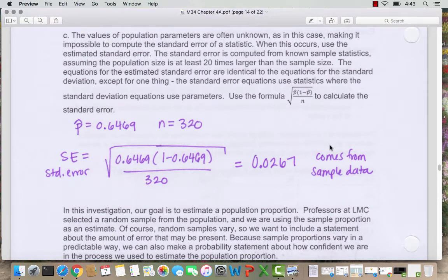So in this case, we don't know the population parameter. So we want to estimate the standard deviation. We call this the standard error equation. It uses statistics instead of population values. So we're going to use p-hat instead of p here.